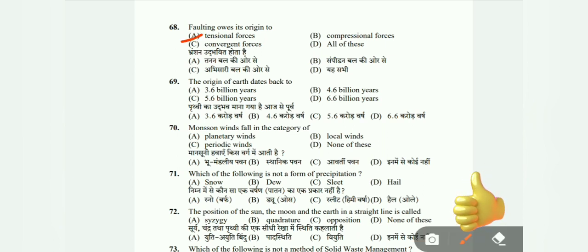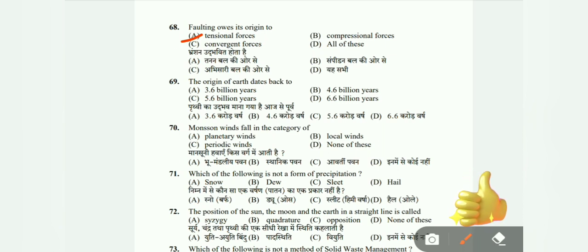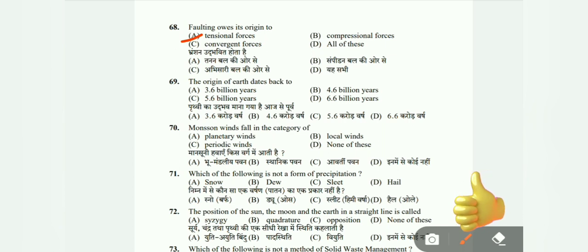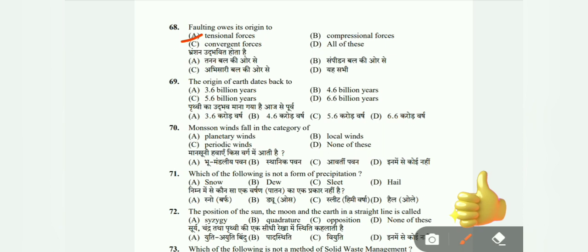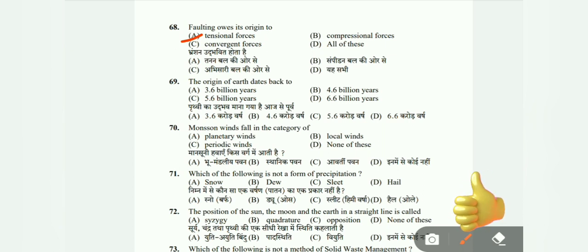Question 69: The origin of the Earth dates back to when? Options: 3.6 billion years ago, 4.6 billion years ago, 5.6 billion years ago, or 6.6 billion years ago.